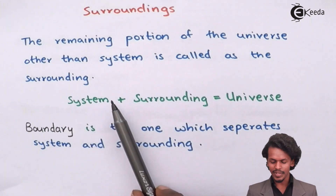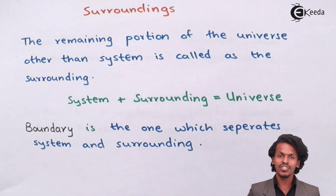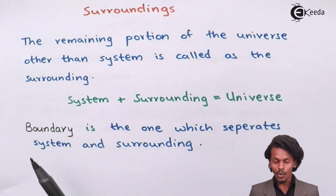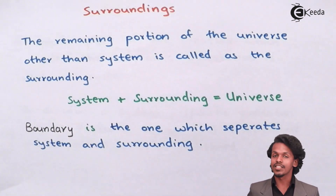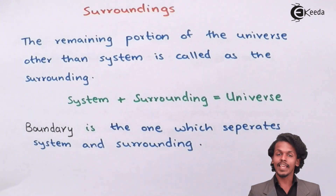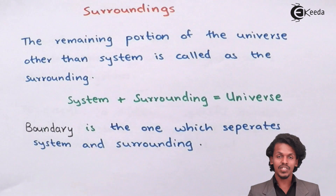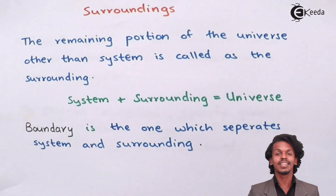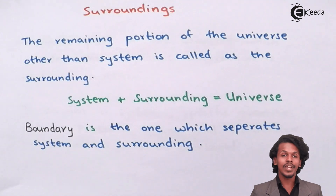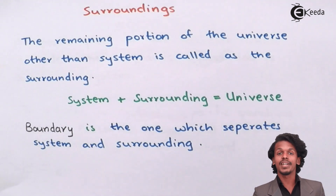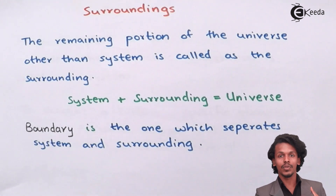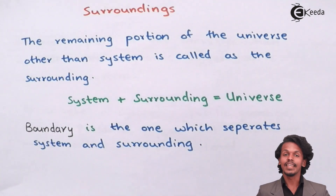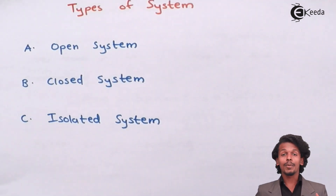The summation of both the system and surrounding is said to be the universe. There is also an imaginary line or partition that divides the system and the surrounding, which is known as the boundary. For example, if I am boiling water, the tank or vessel separates the boiling water from the surrounding — so the vessel acts like a boundary. It does not have to be physical; it can also be an imaginary separation.